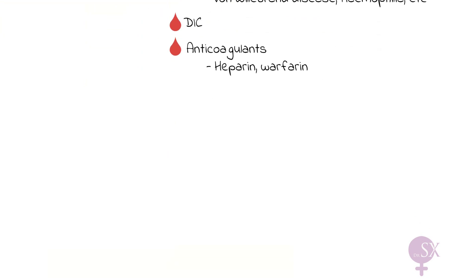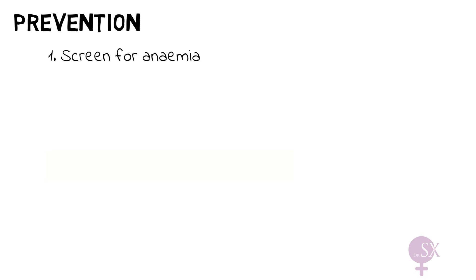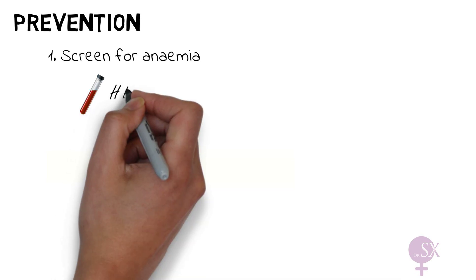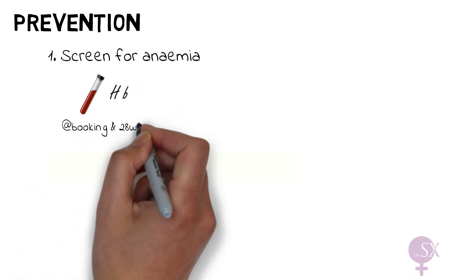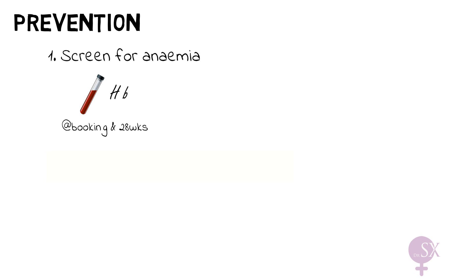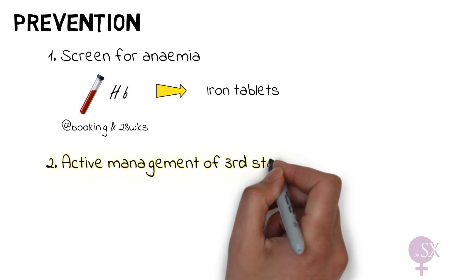There are some things you can do to prevent PPH. First, screening for anemia antenatally has proven to prevent PPH — anemia at delivery is a known risk factor. At booking and again at 28 weeks gestation we check the hemoglobin of all pregnant women, so that if they are anemic we supply them with iron tablets to treat the anemia.